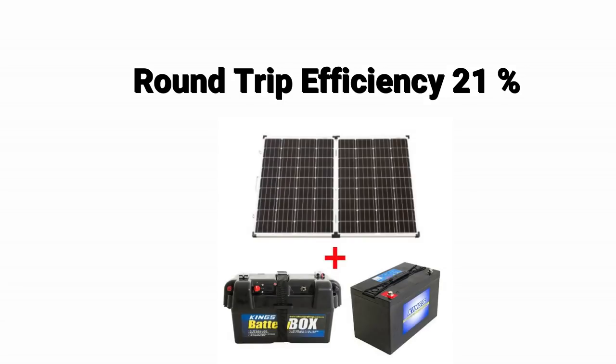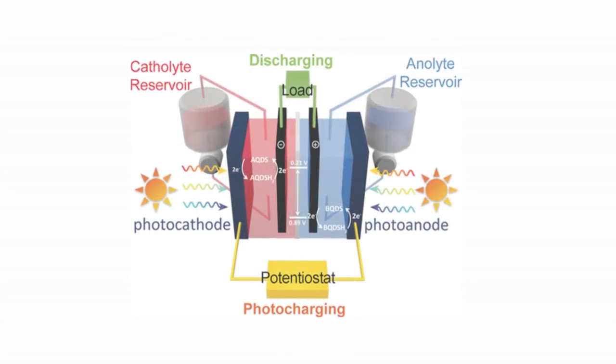This is extremely promising as with conventional solar panel and battery setup we can achieve a maximum of 21 percent. So the solar flow batteries, in the short span of research, are comparable with conventional setup that has decades of research behind it.